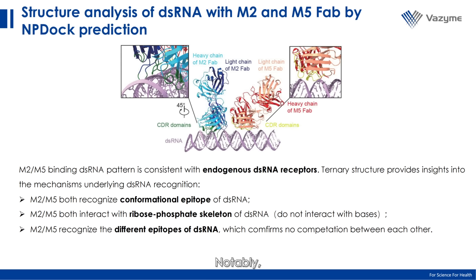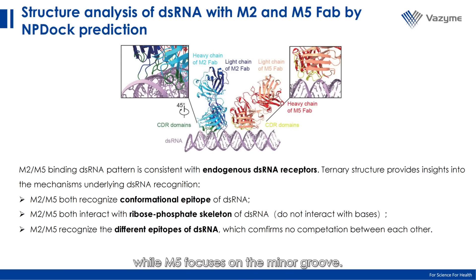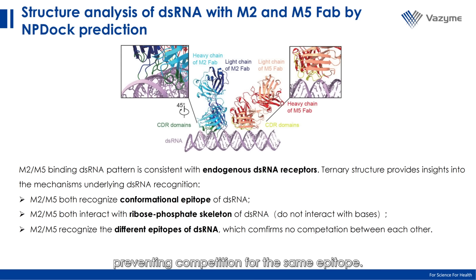Notably, M2 spans both the major and the minor grooves of the dsRNA, while M5 focuses on the minor groove. The two antibodies are positioned 45 degrees apart, preventing competition for the same epitope.